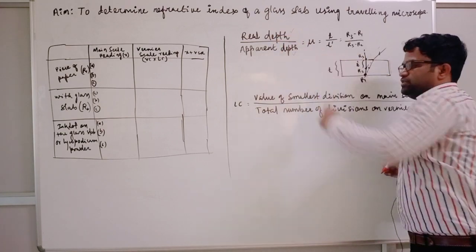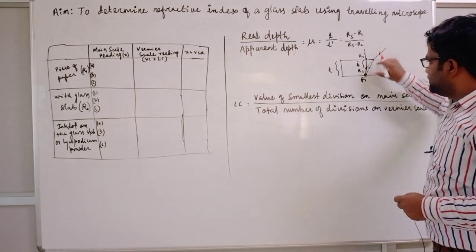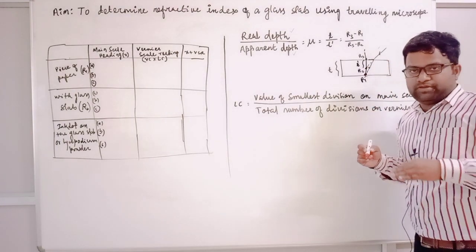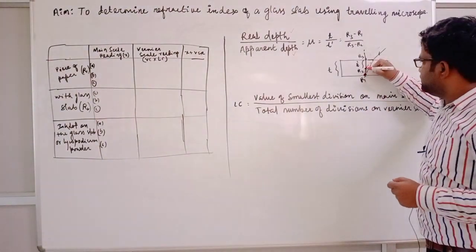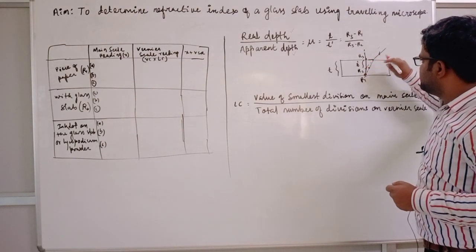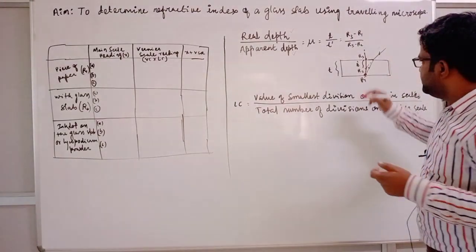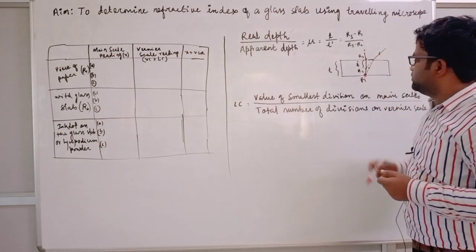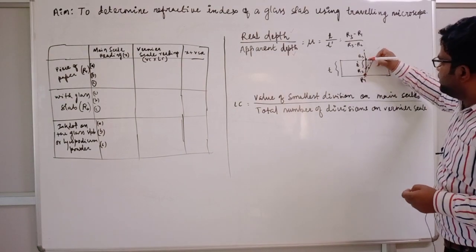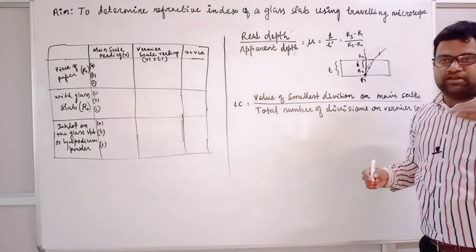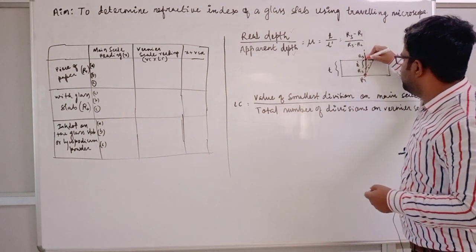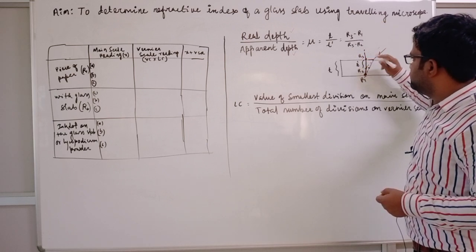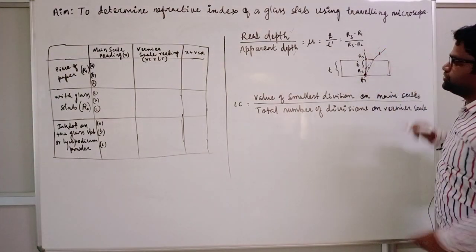Without the glass slab, that depth is your real depth. Now we will put the glass slab and again try to focus this point — it will appear slightly above the original point, and that is called the apparent height. Let's say R2 is the apparent position, R1 is the original point, and R3 is a point on the top surface of the glass slab marked with lycopodium powder or an ink mark.